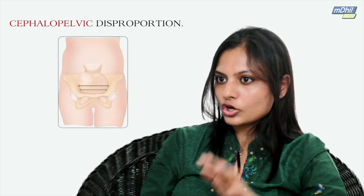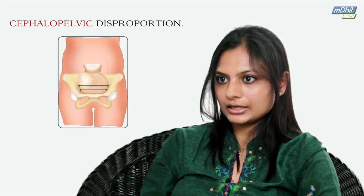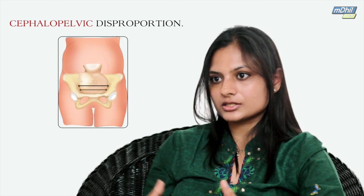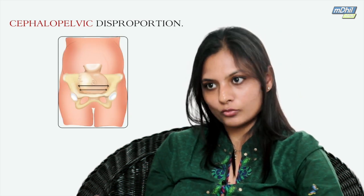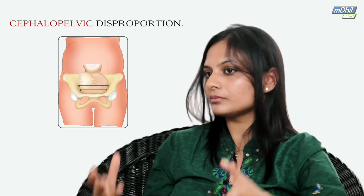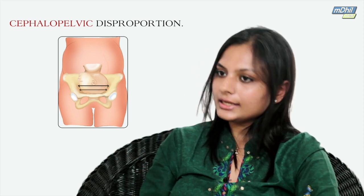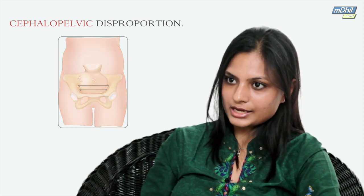For example, if she is a short female and the baby's expected weight is around three kilograms or more, the baby might not deliver vaginally. In that case, we might have to take her for a cesarean. Similarly, a failed induction or failed progress of labor would also be an indication.